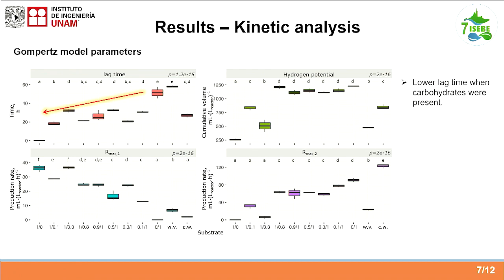In the kinetic analysis, we obtained the parameters of the Gompers model. One thing you can observe is that, depending on the content of carbohydrates, when you add carbohydrates to the medium, you're going to have a decrease in the lactate observed. So when you have carbohydrates in the medium, the lactate conversion is going to be lower. A second observation is that when we compare the maximum rate of carbohydrate consumption to the maximum rate of lactate consumption, we observe that the maximum rate of lactate consumption was higher — around 100 milliliters per liter of reactor per hour — compared to around 40 for carbohydrate consumption.